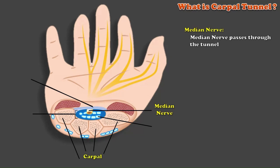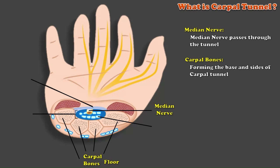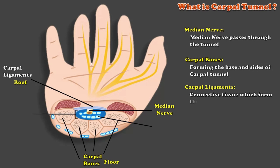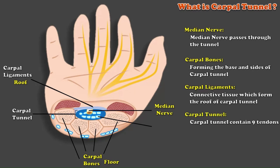The floor of this tunnel consists of carpal bones on the bottom side, which protect the tunnel from the bottom and sides. Apart from this, there are carpal ligaments on the roof of the carpal tunnel which are made of connective tissues. Their job is to create flexibility and protect the median nerve and tendons passing through the tunnel. If there is inflammation or pressure in the carpal tunnel due to some reason, there is a feeling of numbness in the hands. Sometimes the hands become numb due to inflammation in the tendons in the tunnel.